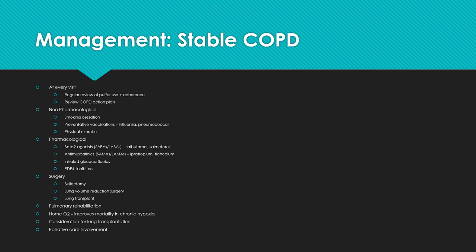Pharmacologically, you have your puffers: beta-2 agonists like salbutamol and salmeterol in short- and long-acting forms, which relax smooth muscle cells in the airways and prevent bronchoconstriction. You also have anti-muscarinics like ipratropium, which block the acetylcholine effect on muscarinic receptors in the airways. Then there are inhaled glucocorticoids and phosphodiesterase-4 inhibitors, which are more effective in the chronic bronchitis phenotype and are only used in more severe cases — GOLD three and four.